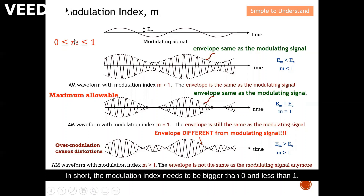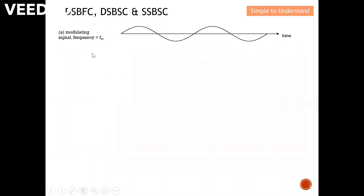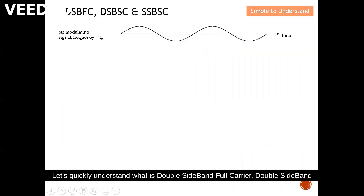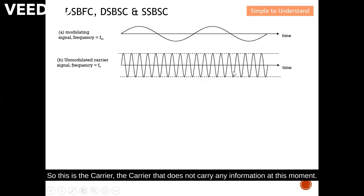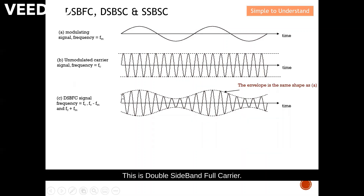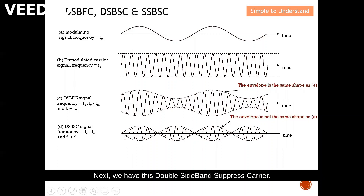Let's quickly understand what double sideband full carrier (DSB-FC), double sideband suppressed carrier (DSB-SC), and single sideband suppressed carrier (SSB-SC) look like in the time domain. I've shown you the frequency domain before — today I'll show you in terms of time domain. This is the carrier without any information. For DSB-FC, the modulating signal still appears at the envelope of the modulated signal.